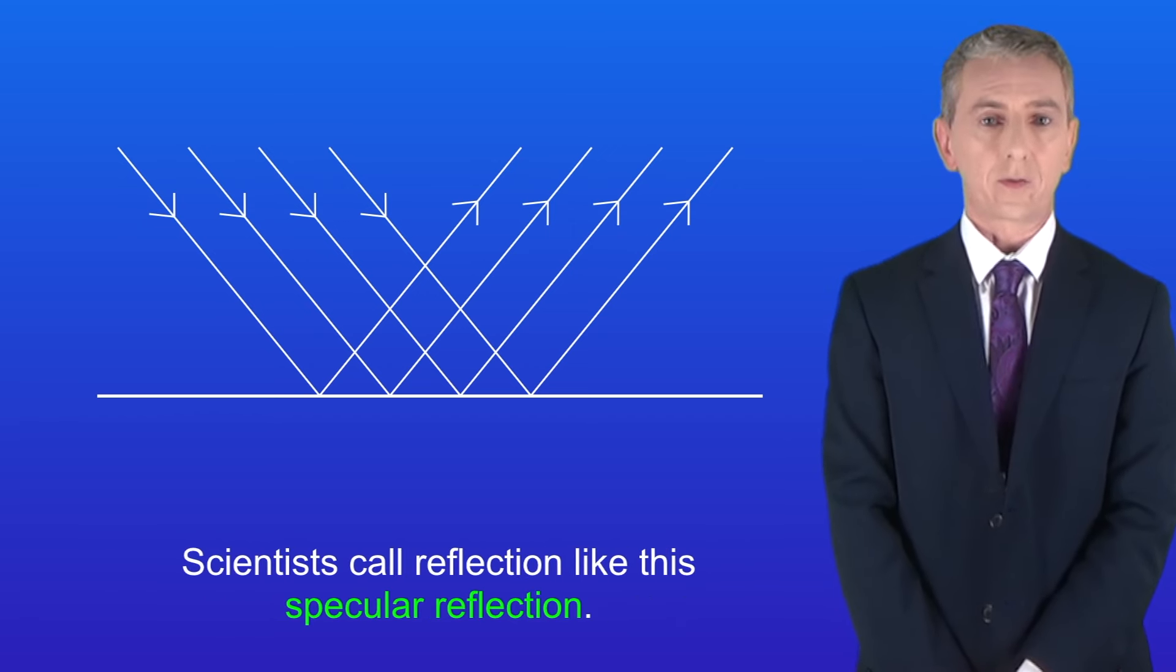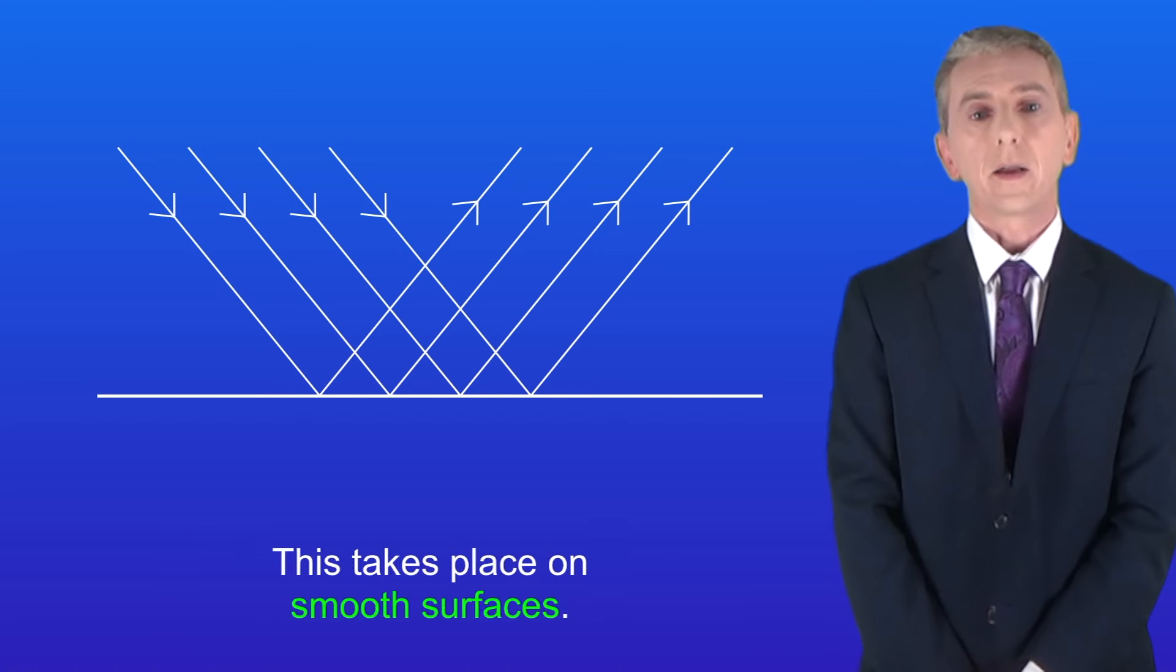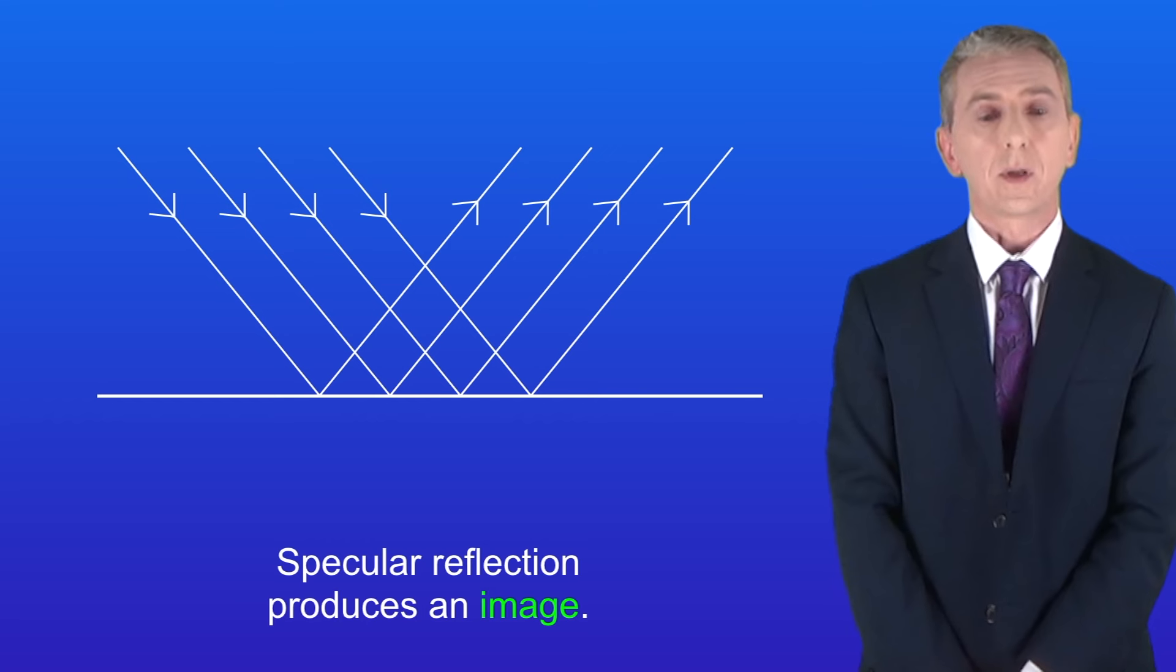Scientists call reflection like this specular reflection and remember that this takes place on smooth surfaces. Specular reflection produces an image.